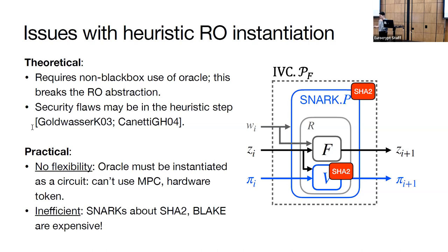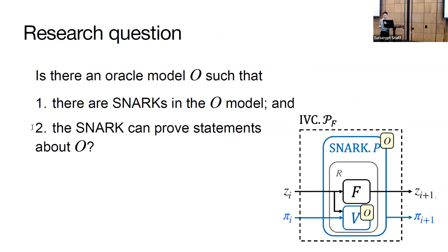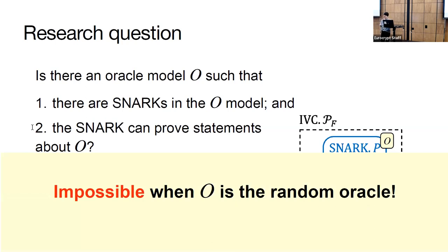Given these disadvantages of heuristically instantiating the random oracle when constructing IVC, my co-authors and I asked the following question. Is there an oracle model such that there are SNARKs in this oracle model, and the SNARK can prove statements about the oracle? In particular, having an oracle model satisfying these two conditions means we can build IVC. We can have a SNARK prover that proves the correctness of its own verifier. As a case study, what if the oracle were the random oracle? The answer is no. The issue is that every random oracle query needs to be checked individually, so the verifier's runtime could be as long as the computation's runtime. What we're looking for is an oracle model in which we can batch many queries to be verified together.